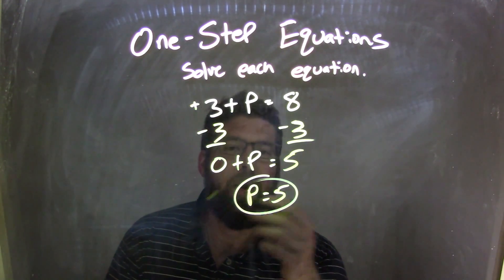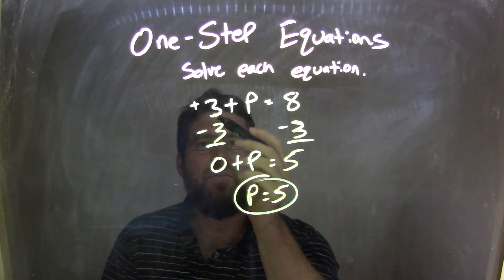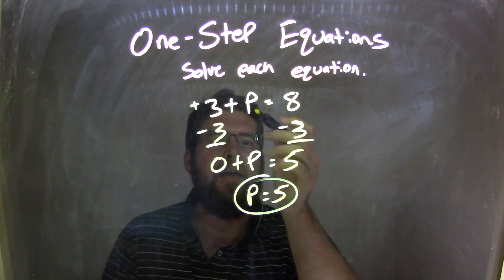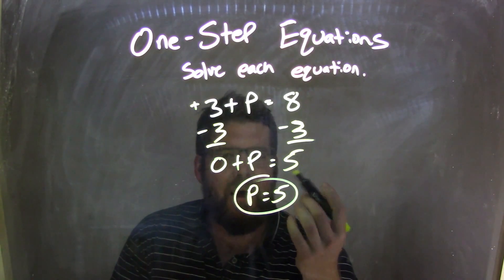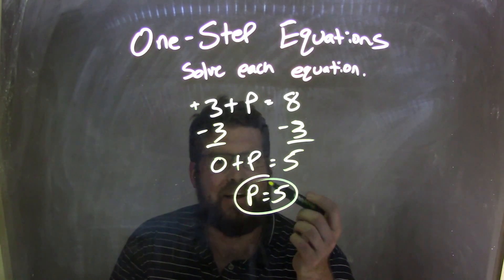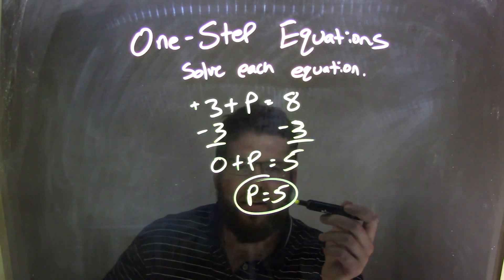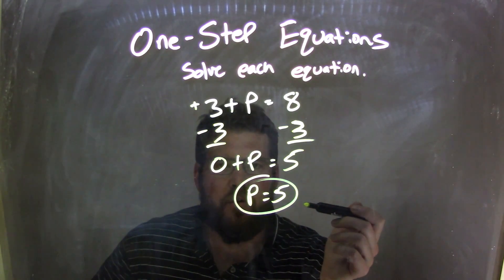What you do to one side, you have to do to the other. 3 minus 3 was 0, and the p just came down. 8 minus 3 was 5. 0 plus p is just p. 0 is the additive identity, and so now we're left with a final answer here of p equals 5.